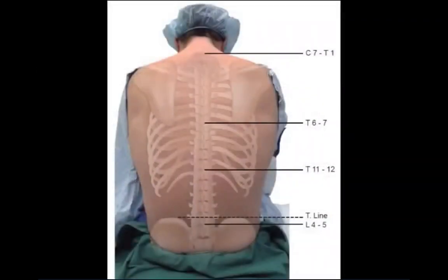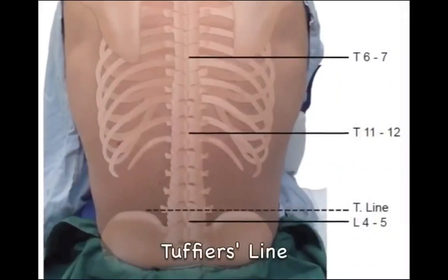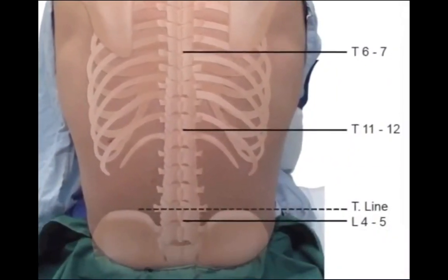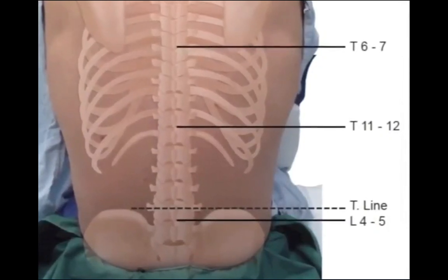Spinal surface landmarks are identified by palpating the spinous processes at the desired level of blockade. The three most easily identified spinous landmarks are the 7th cervical, 7th thoracic, and 4th lumbar vertebrae. When flexed, the C7 spinous process is the most prominent posterior bony structure in the neck. The 7th thoracic spinous process is generally at the level of the inferior tip of the scapula. A line drawn across the superior aspects of the iliac crest, termed Tuffier's line, usually intersects the body of the 4th lumbar vertebrae above the L4-5 interspace.